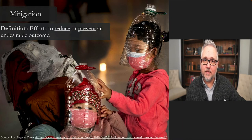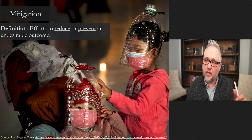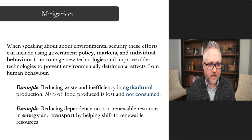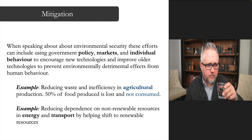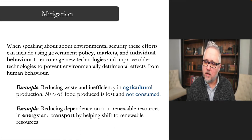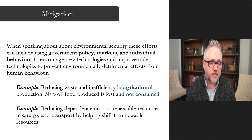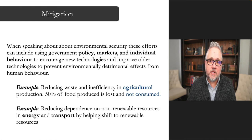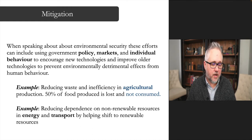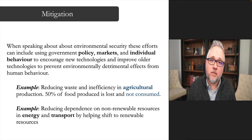Mitigation efforts can be at the individual level, the local level, the national level, or the international level. They can relate to government policy, markets, or individual behavior — to encourage new technologies, improve older technologies, and prevent environmentally detrimental effects on human behavior. One example is reducing waste and inefficiency in agricultural production. Fifty percent of food produced is lost and not consumed — a huge amount of waste. You can mitigate the detrimental effects of agricultural production by trying to reduce that waste, which could also help prevent the types of scarcities we've discussed in this class.